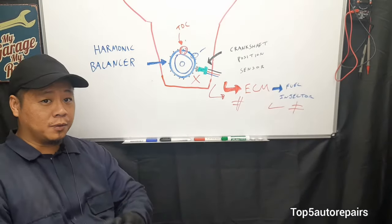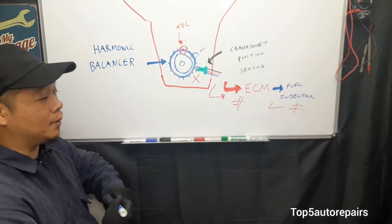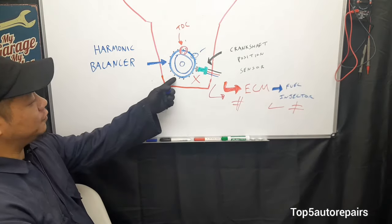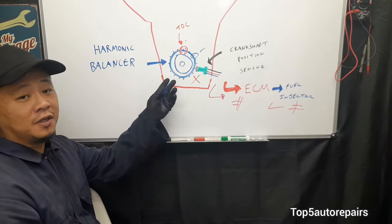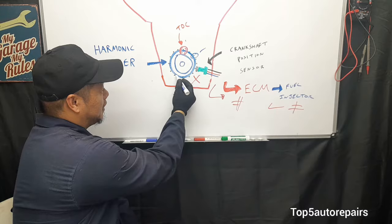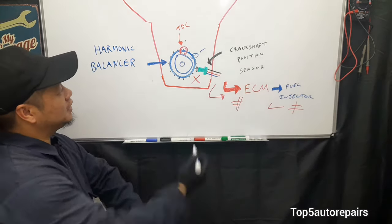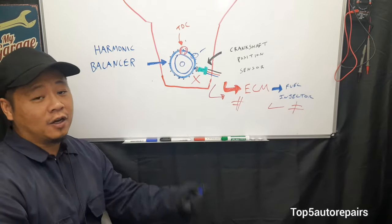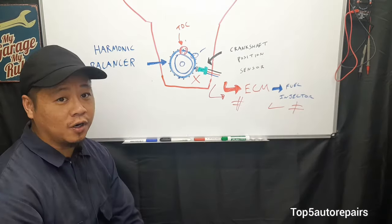Another common problem could be a harmonic balancer problem. For example, the harmonic balancer has these little teeth on it. If one of these teeth becomes damaged or a lot of dirt gets built up on it, that can cause the signal to be interfered with, and that can also cause the signal to cut off.